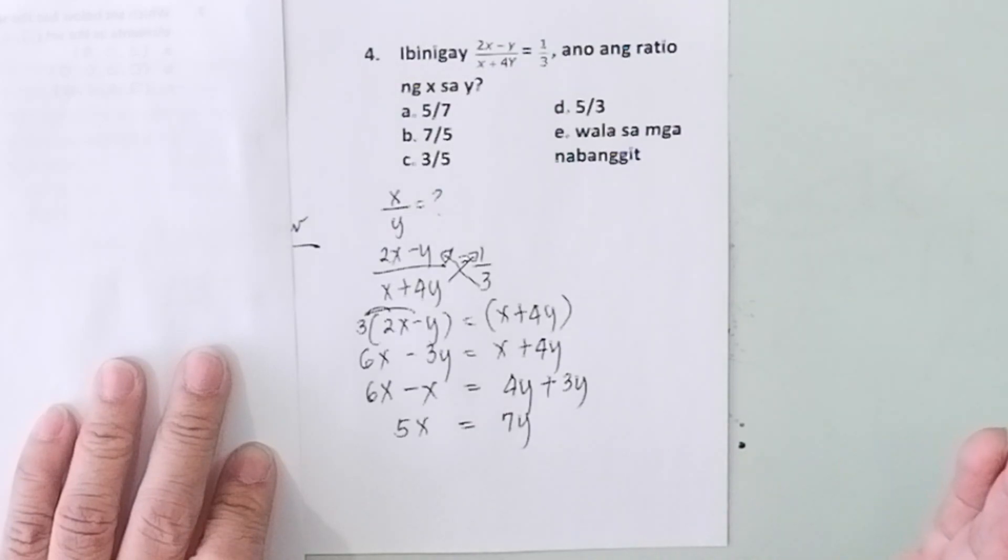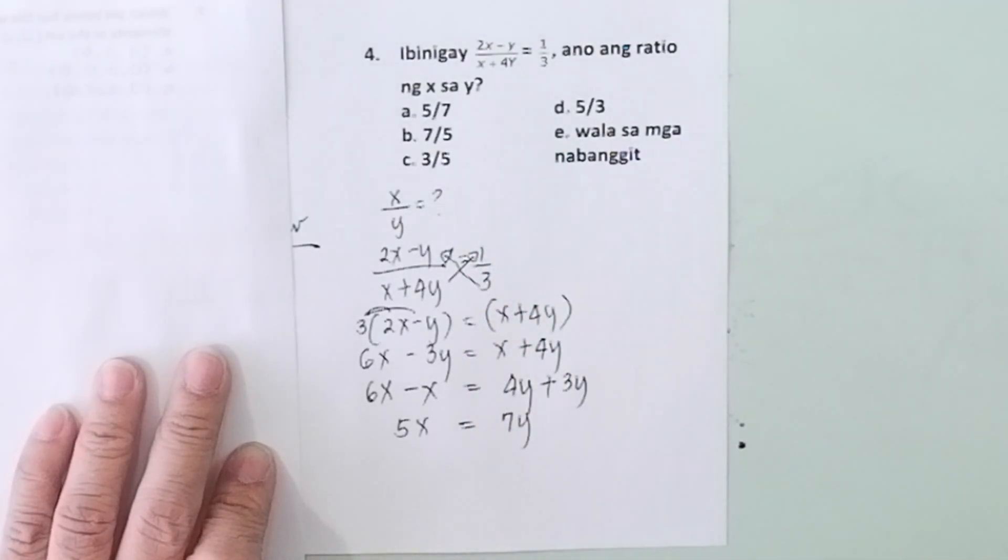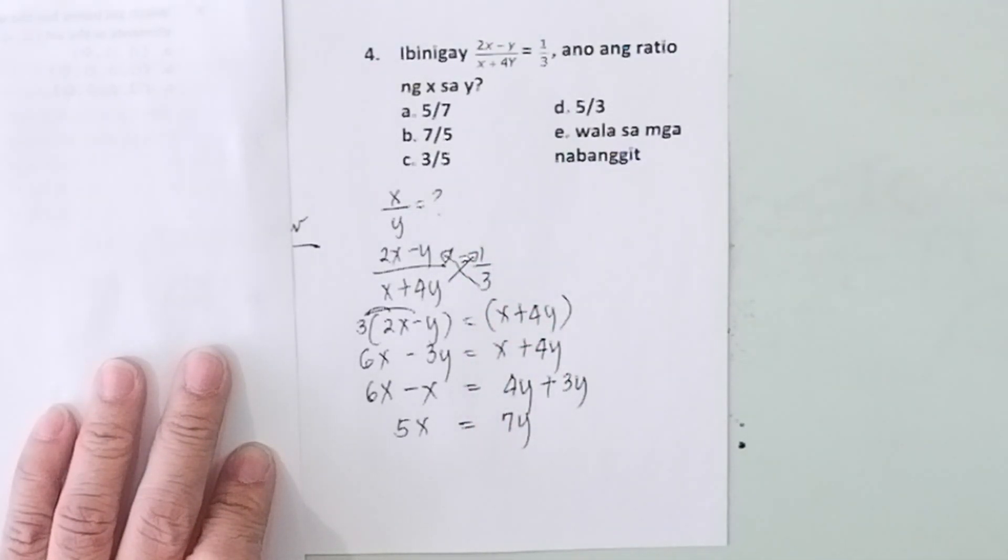Many of you might be tempted to solve for x first and then solve for y and then substitute x and y. No, you don't do that. There is a shortcut to this.